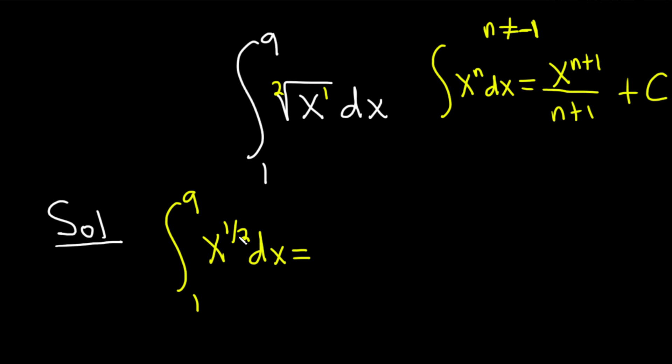So now we integrate this using the power rule. So we take 1 half and we add 1 to the exponent. So 1 half plus 1 is 1 half plus 2 halves which is 3 halves. So we get x to the 3 halves. But when you divide by 3 halves, you really multiply by 2 thirds. So this is 2 thirds x to the 3 halves and we're going from 1 to 9.